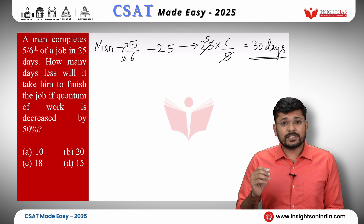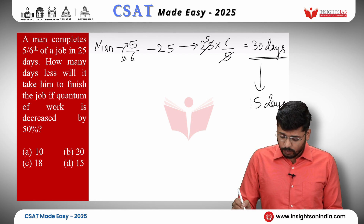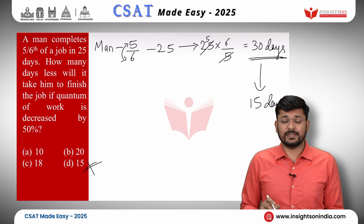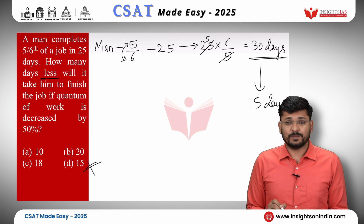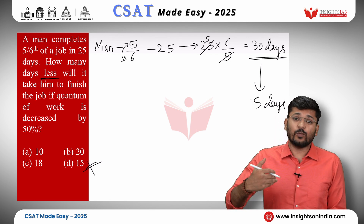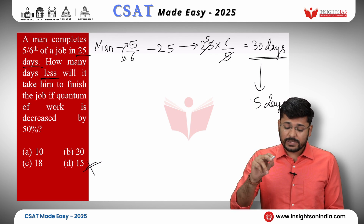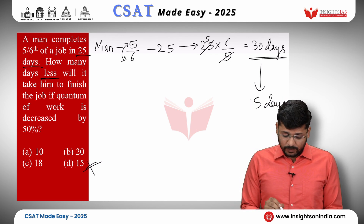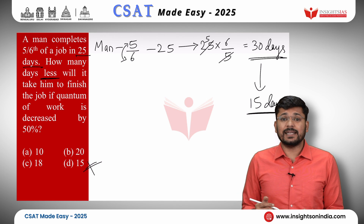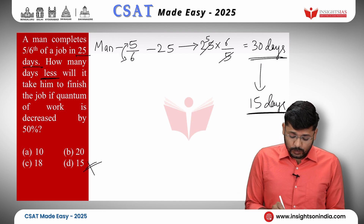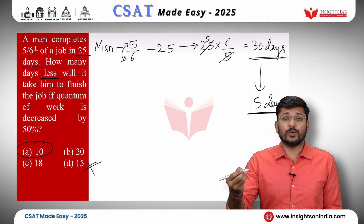If he does the whole work in 30 days, he will do half of the work in 15 days. But the question asks how many days less — less than what? Less than the 25 days mentioned earlier. He was taking 25 days to do 5/6 of the work. Now he will take 15 days to do half the work. 25 minus 15 is 10. So the answer is 10 days less.